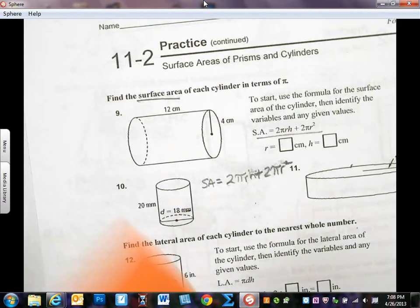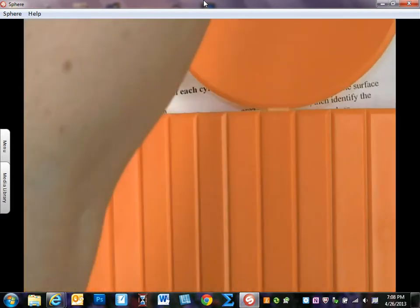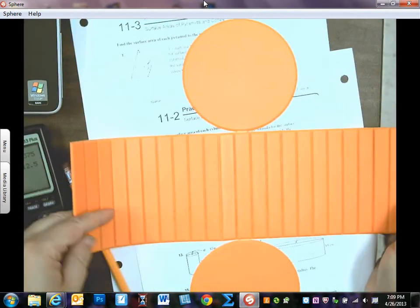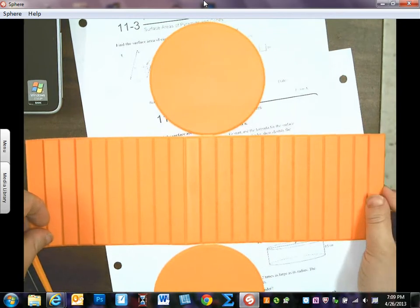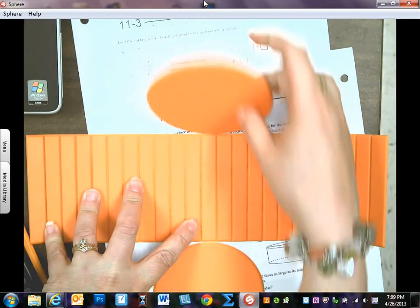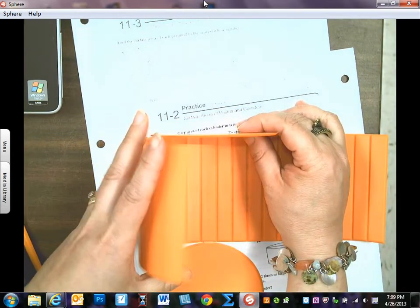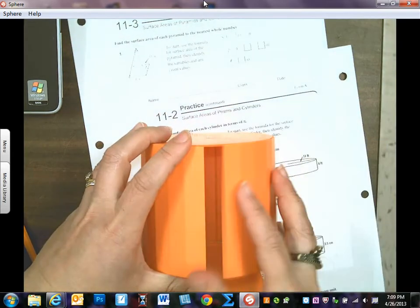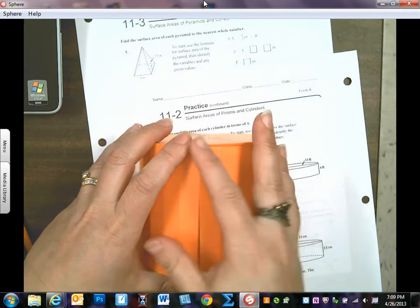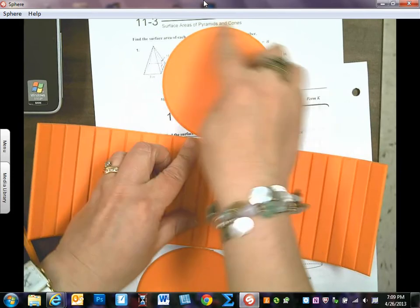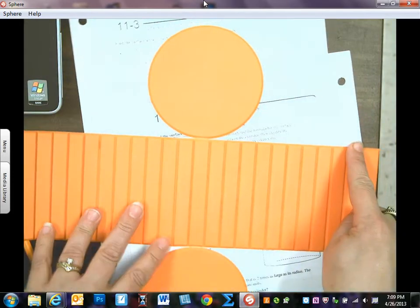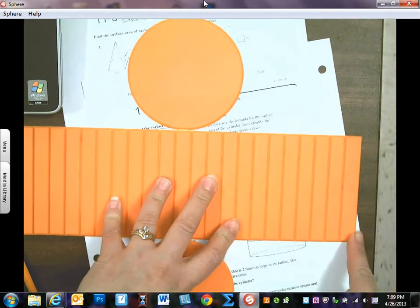Because remember, in this shape, the net looks like this. Let me see if I can't get the net out really quick. But here's my net. Let me zoom out a second. Here's the net of a cylinder. So this is my circumference of the circle. And when I do this, look, this cylinder completely is the circumference of the circle. So what we're really doing is finding the circumference of this circle because that's this length and we're multiplying it by how tall the cylinder is.